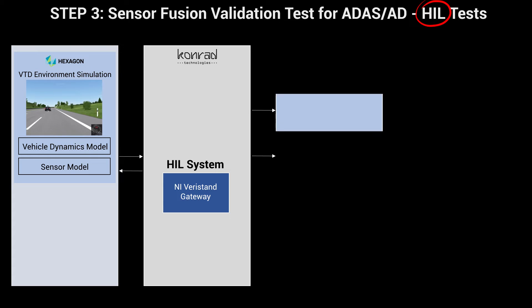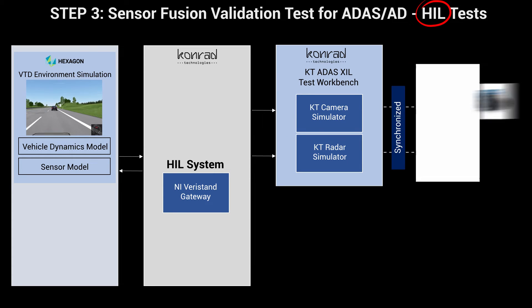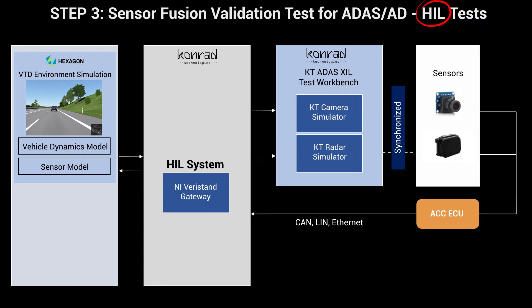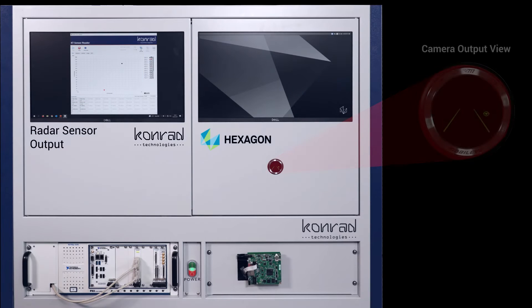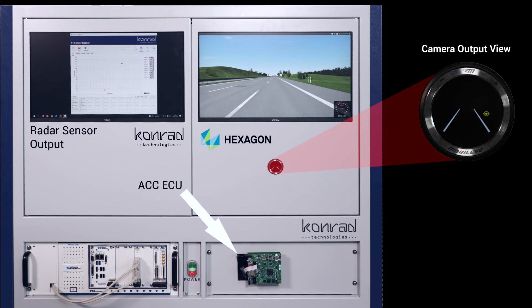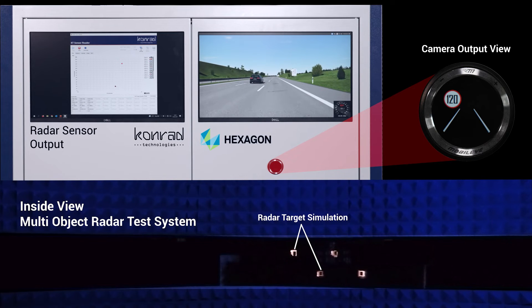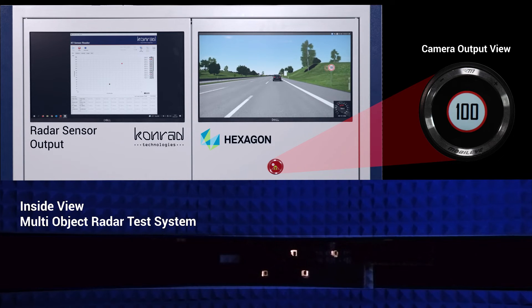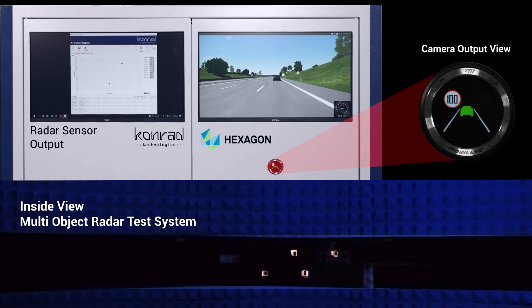For step 3, an ACC model deployed on an external ECU hardware platform will receive the sensor output in real-time to show a hardware-in-the-loop test with sensor fusion. The ACC ECU Demonstration Unit is a hardware interface board that connects to a real-time module running the ACC model. As we repeat the drive test scenario, we see the correct implementation of the ACC function with the initial object being correctly recognized at 2.5 meters by the radar and camera sensors.